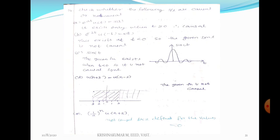To summarize: signals are classified into causal signal and non-causal signal. Causal signal means x(n) equal to 0 when n less than 0. Non-causal means x(n) not equal to 0 when n less than 0. Anti-causal means x(n) equal to 0 when n greater than or equal to 0. Important point: u(t) is a unit step function. u(t) is equal to 1 when t greater than or equal to 0. u(-t) is equal to 1 when t less than or equal to 0.